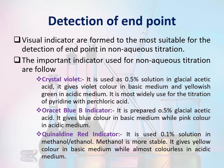Detection of endpoint in non-aqueous titration: Visible indicators are found to be most suitable for the detection of endpoint in non-aqueous titration. The important indicators used are: first, crystal violet — used as 0.5% solution in glacial acetic acid. It gives violet color in basic medium and yellowish green in acidic medium. It is most widely used for the titration of pyridine with perchloric acid. Second, oracet blue B indicator — preferred as 0.5% in glacial acetic acid. It gives blue color in basic medium and pink color in acidic medium. Third, thymolindine red indicator — used as 0.1% in methanol or ethanol. It gives yellow color in basic medium and is almost colorless in acidic medium.